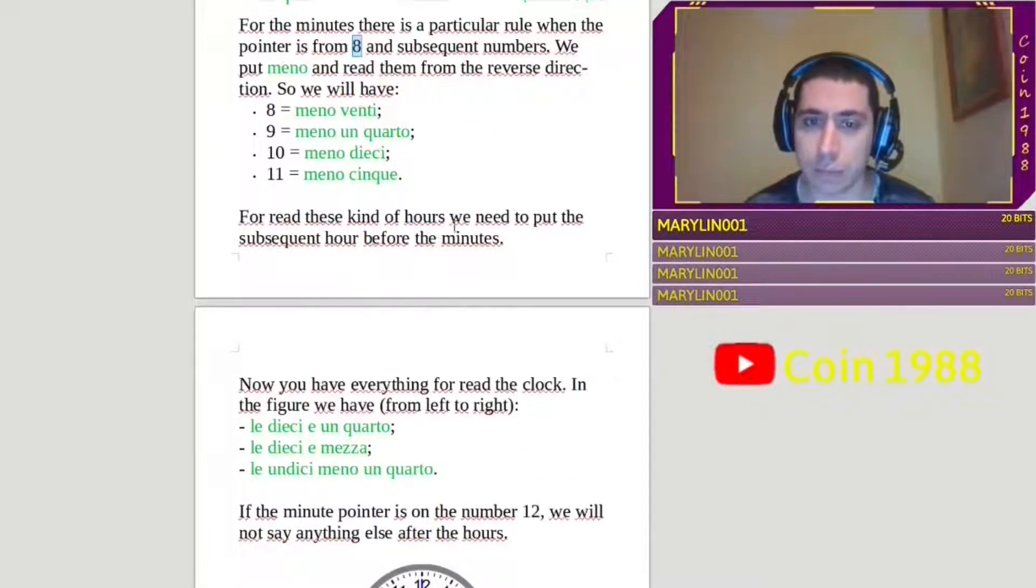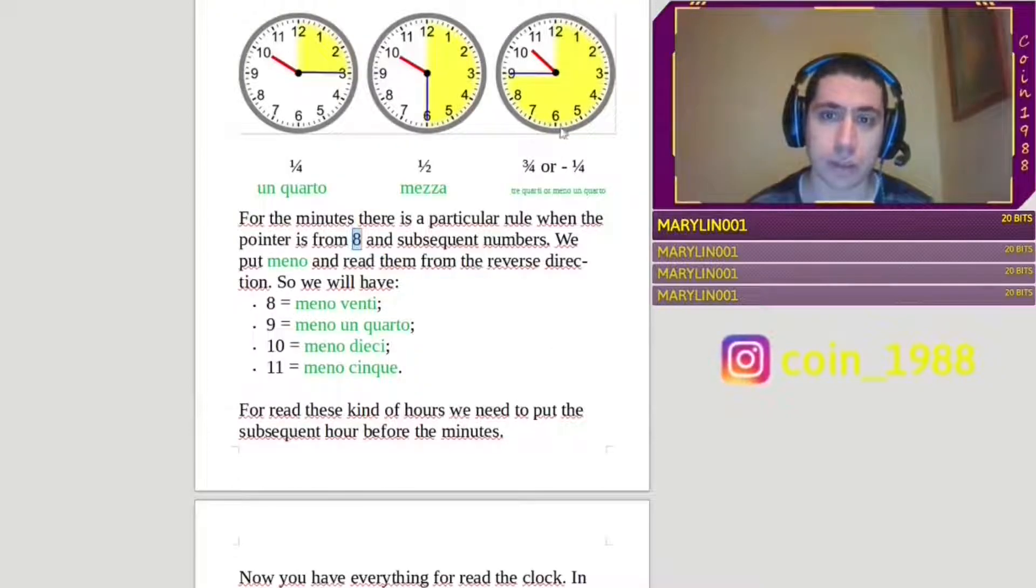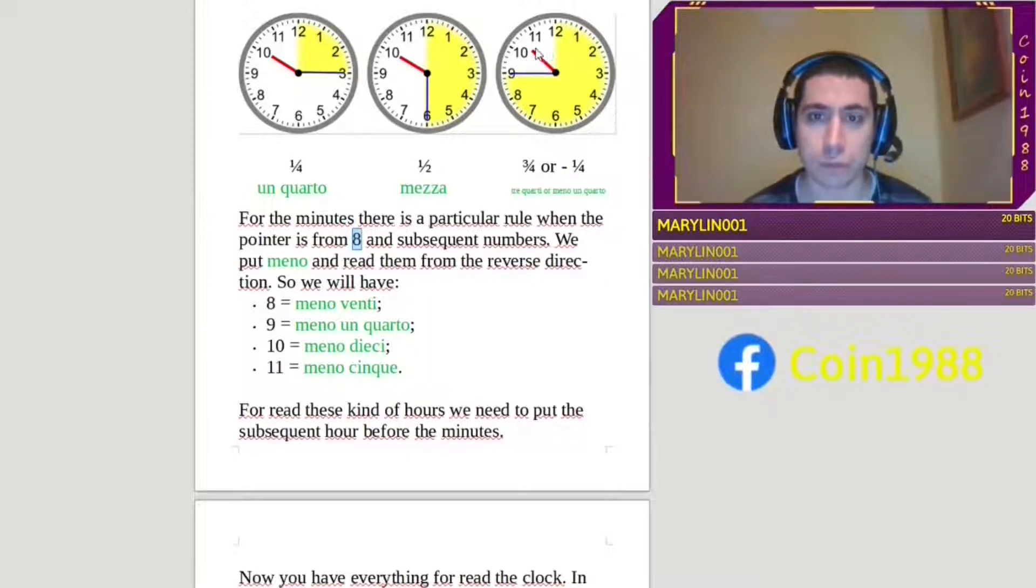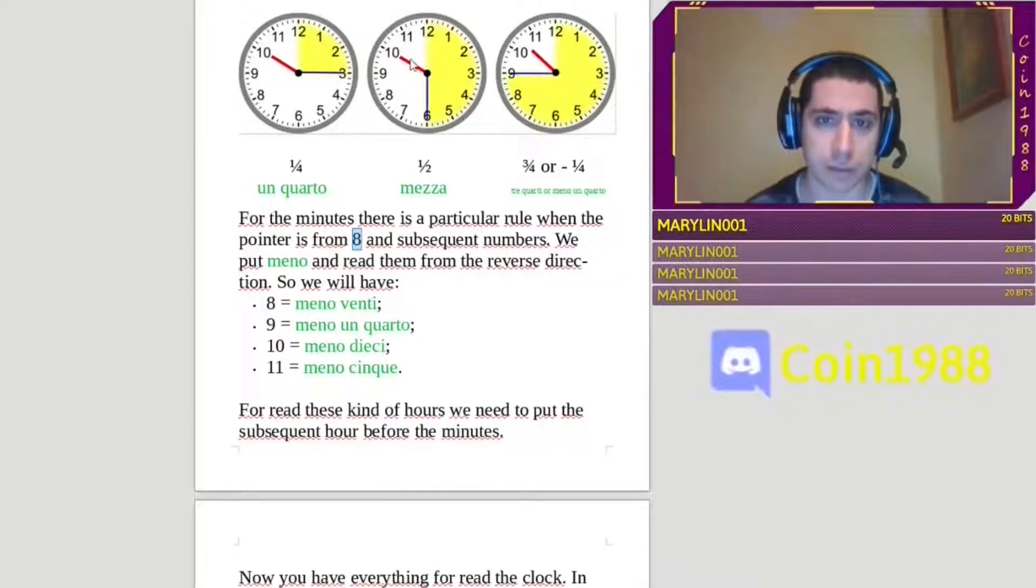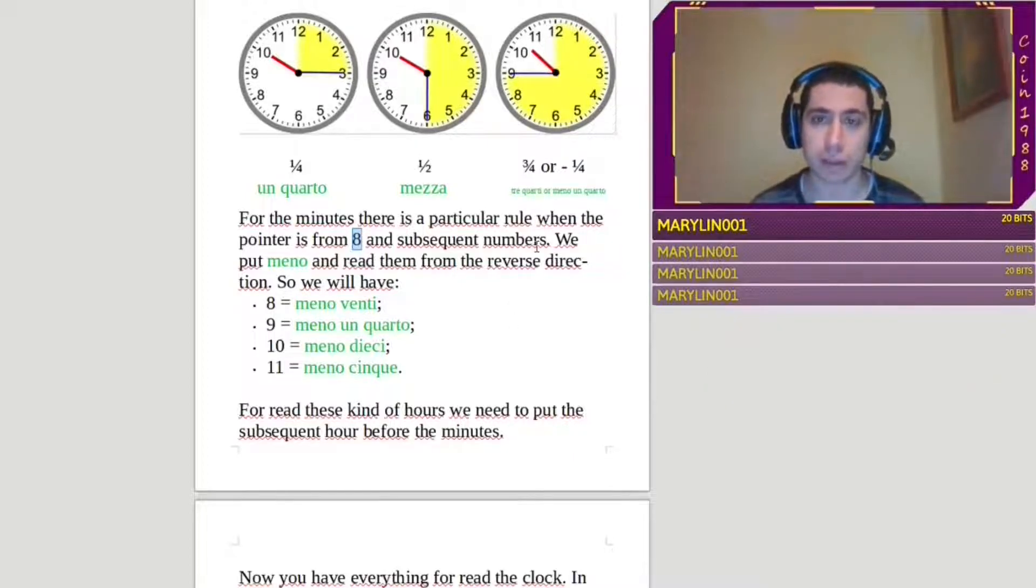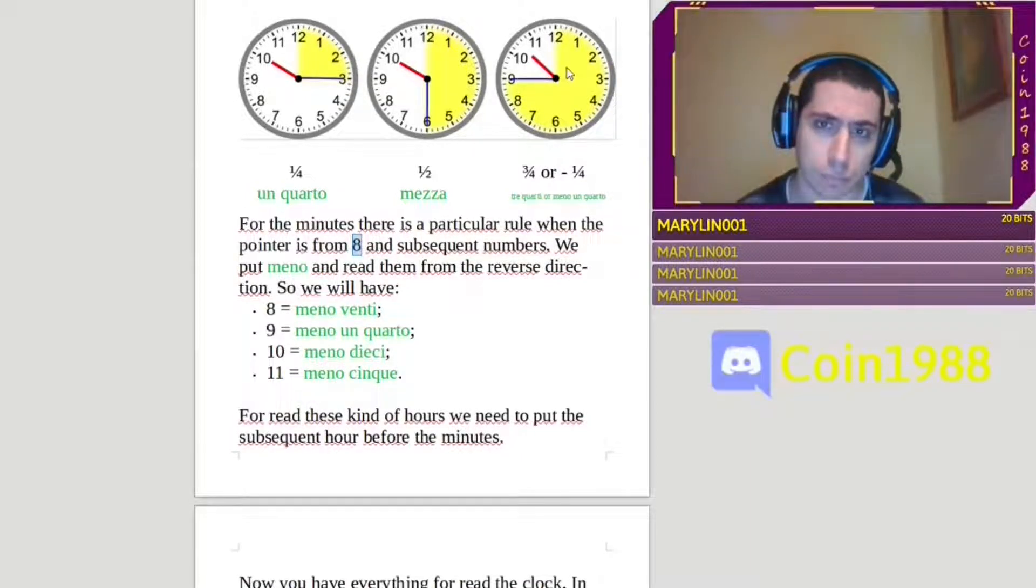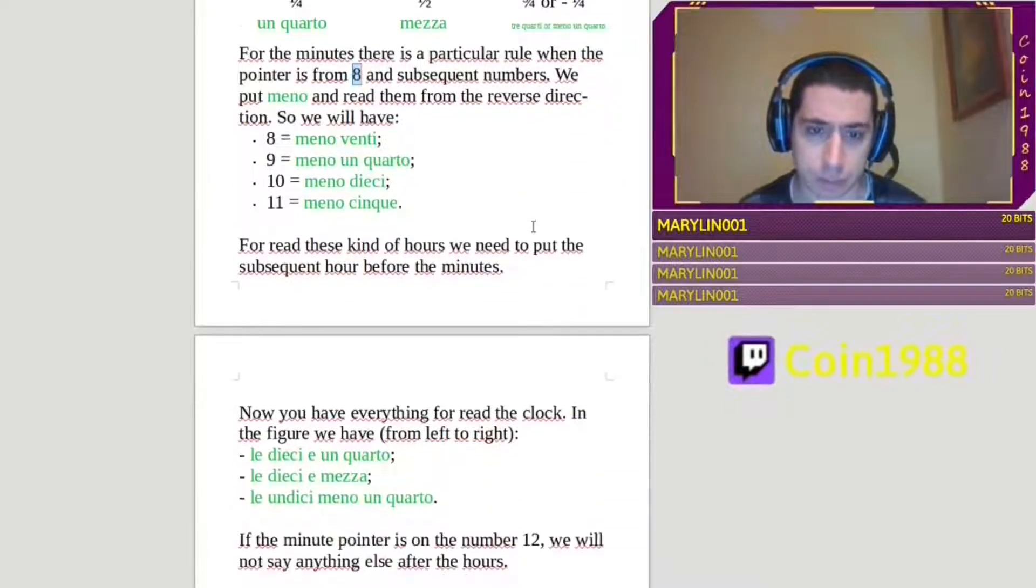For read this kind of hours, we need to put the subsequent hours before the minute. So, in this case, the red is on 10, but for said hours, you need to say not 10, like in the first and second image. But you need to say 11, because it is like if you say, for arrive to 11, miss 15 minutes. In this case, you will say, undici meno un quarto. Perfetto, it is right.